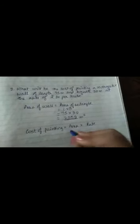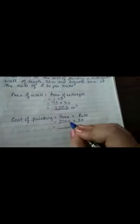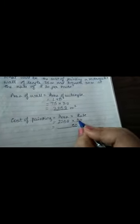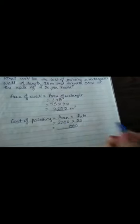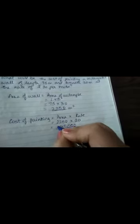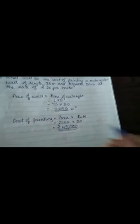So the units has to be written properly. Now I have to find the cost of painting. Cost of painting will be the area into the rate. My area is 2250. I will multiply by 20 because the rate is 20 per meter. So first I write the two zeros and then I will multiply by 2. 5 twos are 10 carry 1, 2 twos are 4 plus 1, 5, and 2 twos are 4. So my answer is 45,000 rupees.